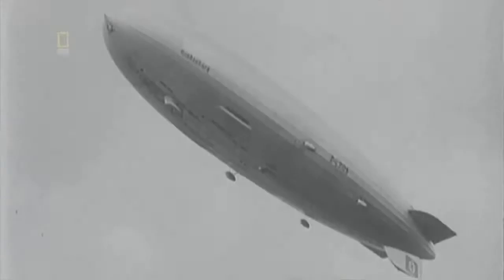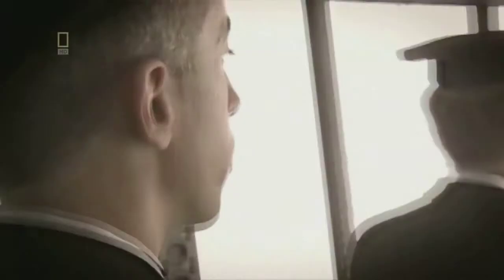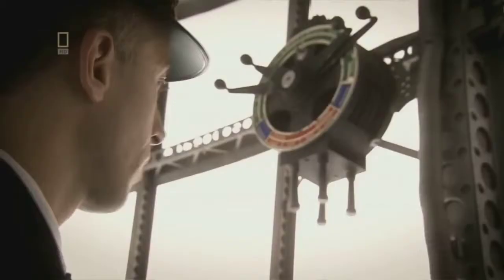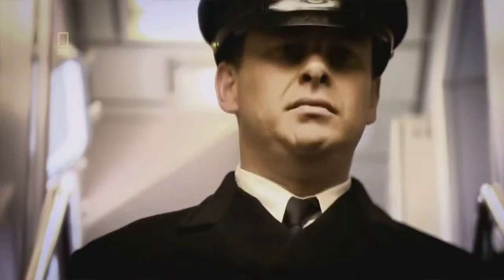Eight minutes before the catastrophe, Captain Pruss notices that the ship is tail heavy. He orders the crew to dump water to balance the ship, then orders another sharp turn, this time to the right, to line up with the mooring mast. The ship is still tail heavy. Captain Pruss orders six crew members to walk to the nose to try to counterbalance the sloping tail. But Pruss is too concerned with landing to realize that the airship may be leaking as a result of hydrogen leaking.